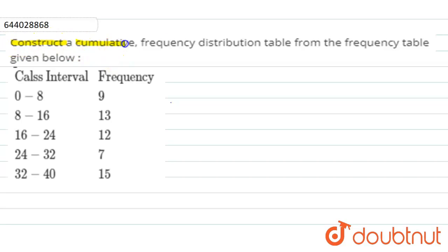construct a cumulative frequency distribution table from the frequency table given below. The frequency table is given to us and we need to construct a cumulative frequency distribution table. Class interval is given to us and frequency is given to us.